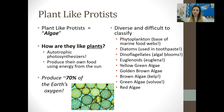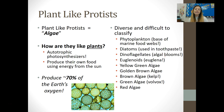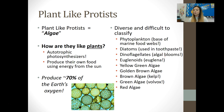Now moving on to plant-like protists. Plant-like protists are collectively known as algae. They are autotrophic photosynthesizers — just like plants, they produce their own food using energy from the sun. About 70% of the Earth's oxygen actually comes from the photosynthesis happening inside plant-like protists, and not from plants themselves, which is pretty remarkable.